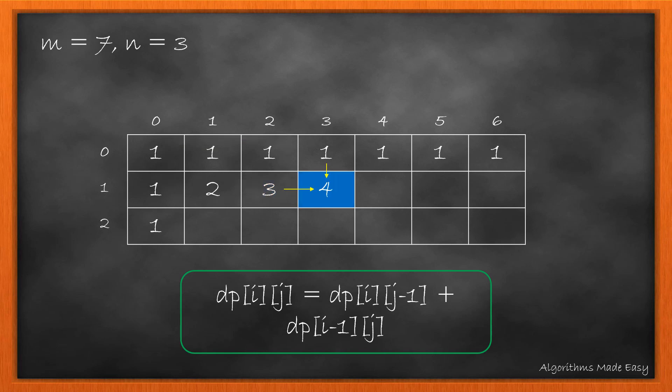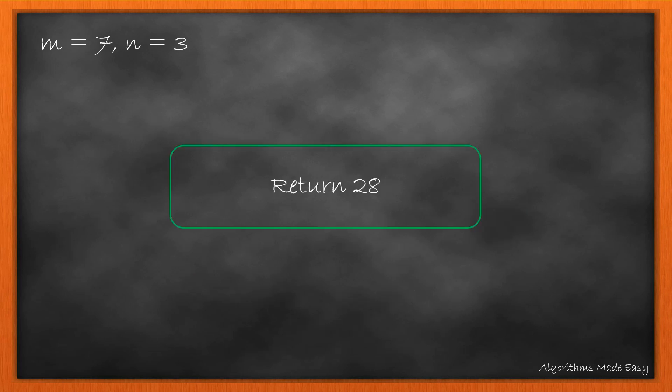If we continue filling the matrix using this formula, we get this as our final DP. The value in the destination block is our answer, so we return 28.